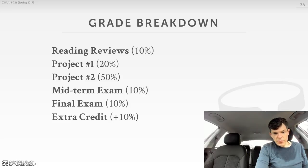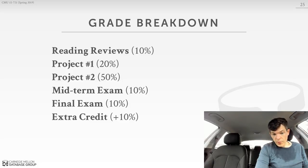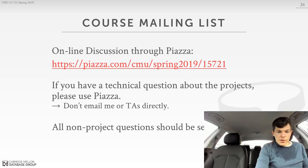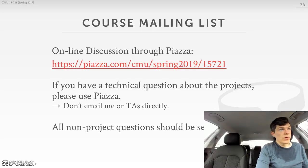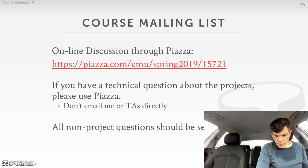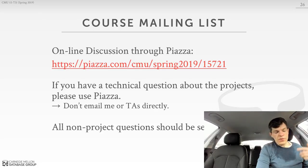The grade breakdown for the semester is as follows: reading reviews are due every class and are 10% of the grade. Project 1 is 20%, Project 2 is 50% — so 70% of the final grade is for the programming projects. The midterm and final exam are each 10%. The course mailing list is entirely on Piazza. Please use it if you have technical questions about the projects. For personal issues, send those directly to me. Post project questions on Piazza so everyone can see them — don't send personal emails because we don't want people asking the same questions multiple times.